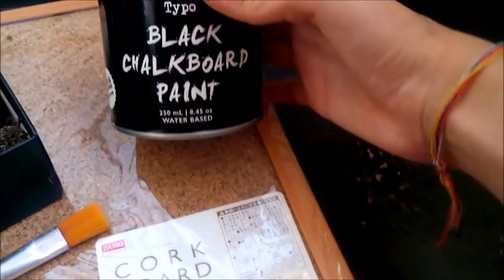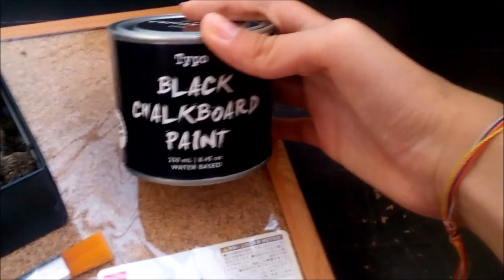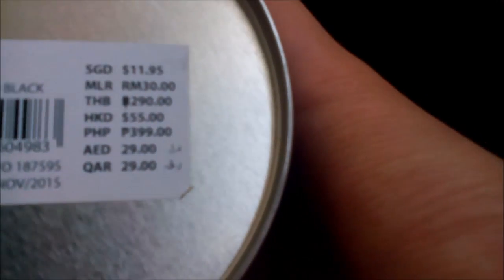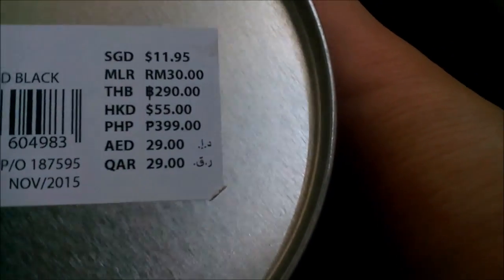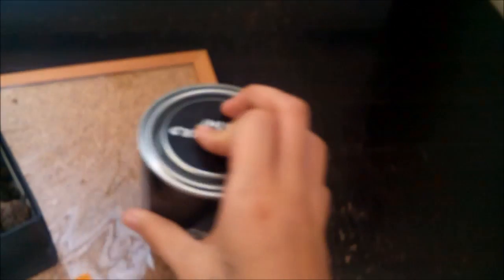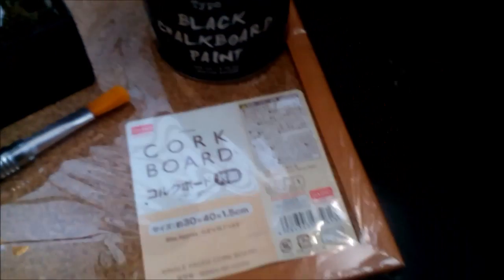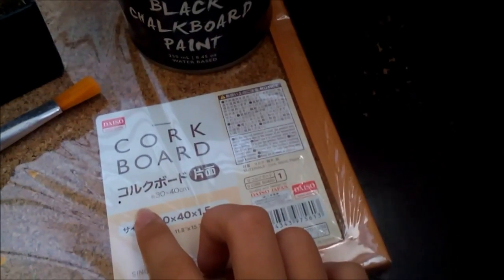Next you will need chalkboard paint. I got this from Typo at a reasonable price. You'll also need a paintbrush and a chalkboard, not to mention some tape to tape the edge so you won't paint the wooden frame.